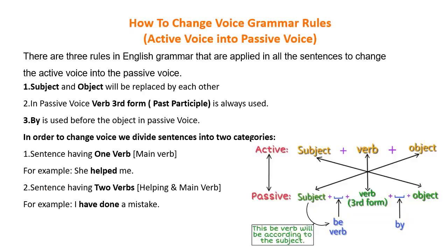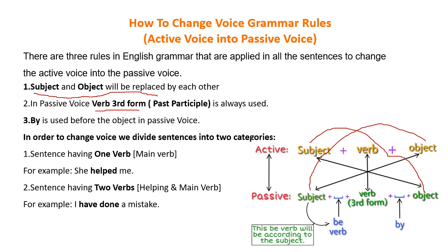Passive voice بنانے کے لیے تین general rules ہیں جو ہر tense کے ہر جملے پر لاگو ہوتے ہیں: پہلا — subject اور object ایک دوسرے کو replace کریں گے، یعنی active voice کا object subject کی جگہ لے لے گا اور subject object کی جگہ لے لے گا۔ دوسرا — passive voice میں ہمیشہ third form of the verb یعنی past participle use ہوگی چاہے کوئی بھی tense ہو۔ تیسرا — passive voice میں 'by' کا اضافہ ہوتا ہے۔ یہ chart آپ کو پورا scenario clear کر دے گا۔